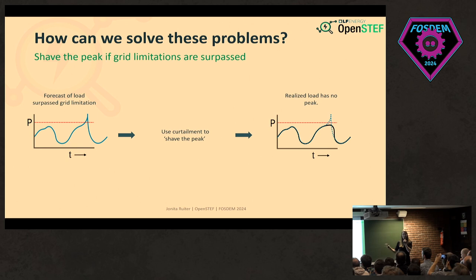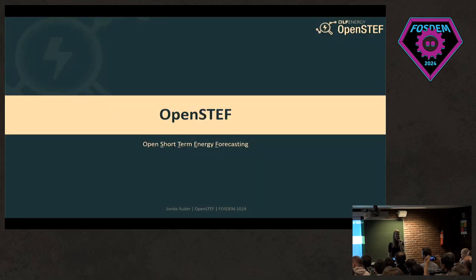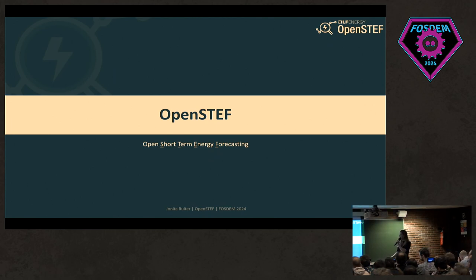To be able to do this, we need to know that left image — we actually need accurate forecasts. And this is where we have OpenSTEP. OpenSTEP stands for Open Short-Term Energy Forecasting, so let me explain a little bit more about it.